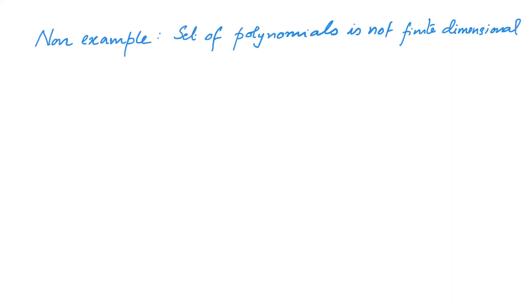Now let us look at a non-example — a space that is not finite dimensional. An example would be the set of all polynomials, which we saw forms a vector space. To show it is not finite dimensional, consider n arbitrary polynomials p1, p2, p3, ..., pn — arbitrary elements from the vector space of all polynomials.